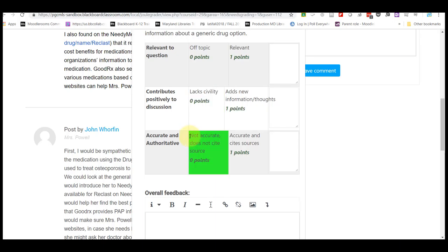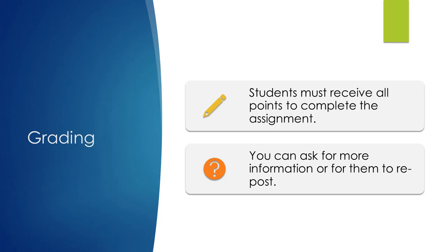Participants should give you an idea of where they found their information. Click on the boxes to award points. Students must be awarded all the points to complete the assignment. You can ask for more information or for them to repost if they are off track. We will discuss how to do that in a minute.